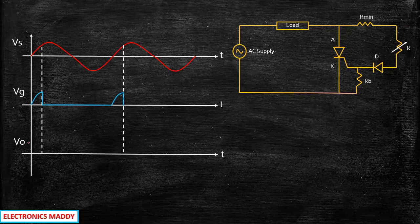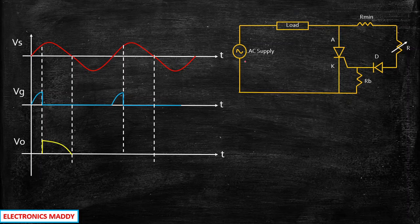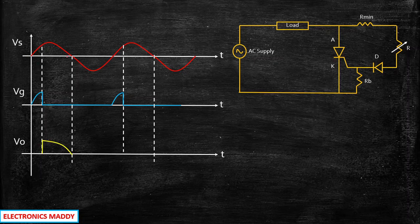When we fire the gate voltage VG at the firing instant, the output voltage will be equal to the supply voltage. The output voltage is nothing but the voltage across the load — whatever is supplied will appear across the load terminals. From the firing point, the SCR acts as a short circuit and is turned on, so the AC supply directly appears across the load terminals. For each cycle, when there is a gate pulse, there will be an output voltage equal to the supply voltage Vs.